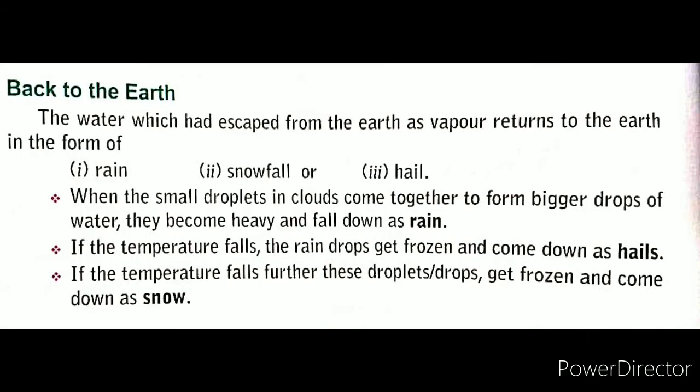Well children, these are the different methods by which water leaves the earth's surface. This lost water returns back to the earth's surface in the form of rain, snowfall, and hail. If the temperature falls, the rain drops become frozen.